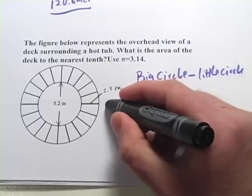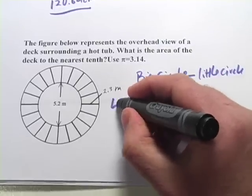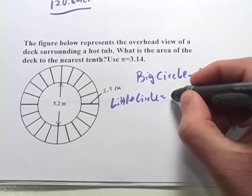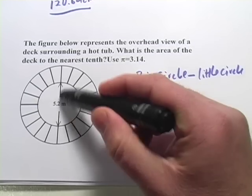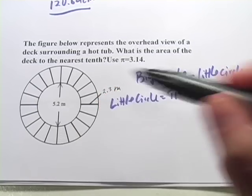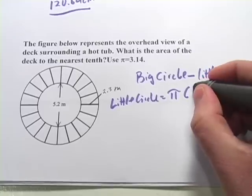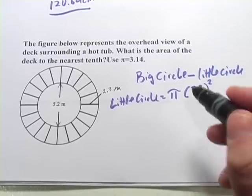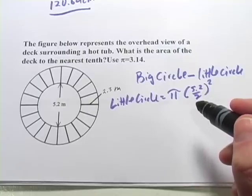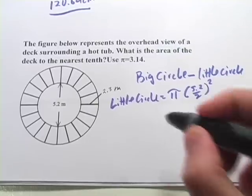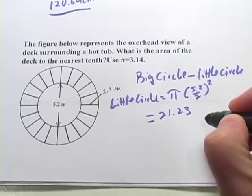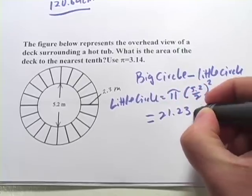Let's figure out the little circle first. So little circle is pi times r squared. Well, what's the radius here? It's going to be half of 5.2. So I'll just write that as 5.2 divided by 2, and then we'll square that. So you can go ahead and punch that into your calculator. And let's see, they want us to use 3.14 for pi. So that should equal 21.23, and this is meters squared.